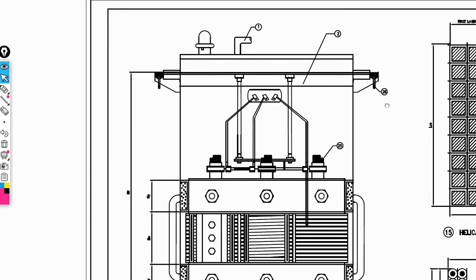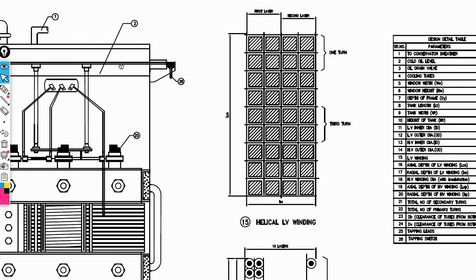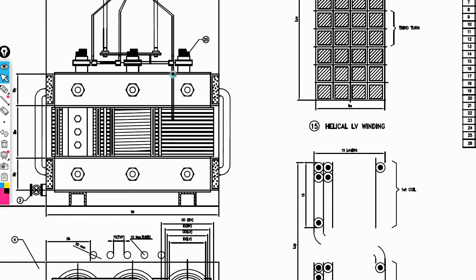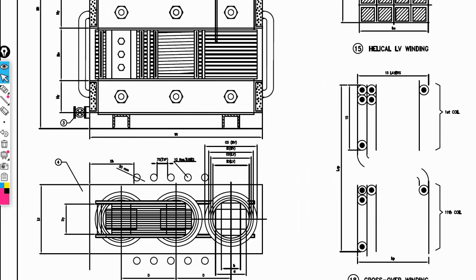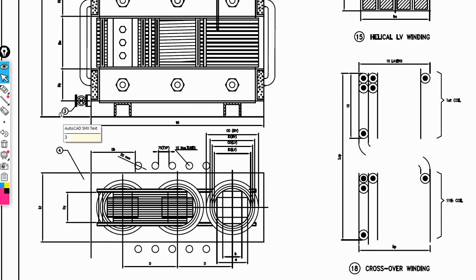The first parameter indicates the conservator section and breather section. The second parameter is the cold oil level — that is, the oil level of the transformer. Then, oil drain wall — we need the oil drainage wall.